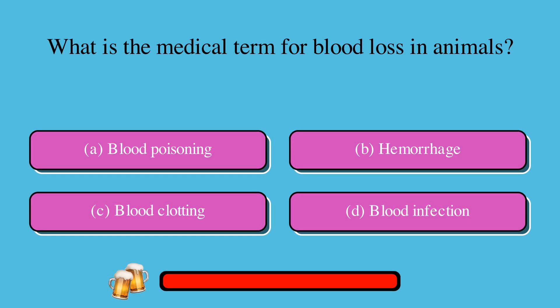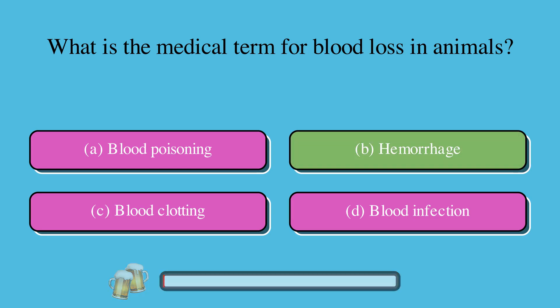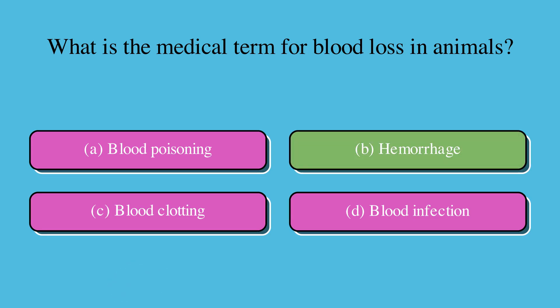What is the medical term for blood loss in animals? A. Blood poisoning, B. Hemorrhage, C. Blood clotting, or D. Blood infection. The correct answer is B. Hemorrhage.